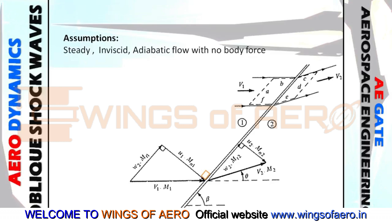Before going to any relation, we will state the basic assumptions. There are four important assumptions: steady flow, inviscid (no viscous force or viscous effect), adiabatic flow (no heat is added to the system), and no body force applied to the system. Here we have taken a control volume ABCDEF. This is ahead of the shock wave, inclined at angle theta.